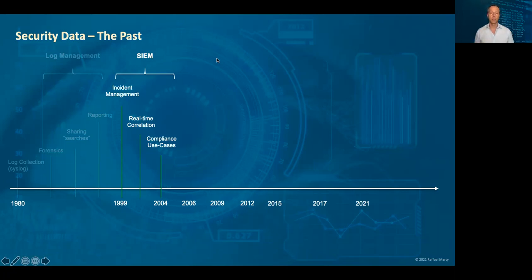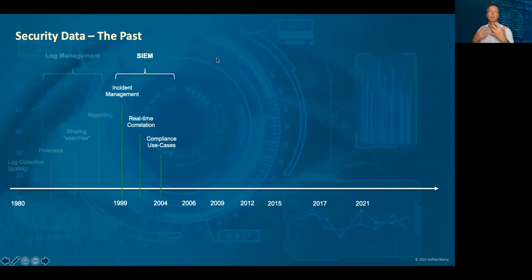We got into real-time correlation, which got more and more complicated. A lot of people say that compliance was really the savior of the SIM products, because at the time it was very hard to justify the budget or expense for a SIM tool. But when the compliance requirements came about — especially PCI — you had to do all this reporting, which was really cumbersome. Log management and SIMs really helped by providing compliance packages that made reporting much, much easier.